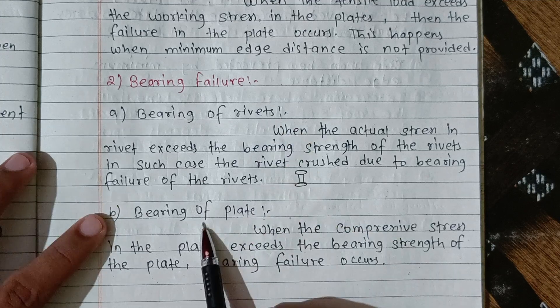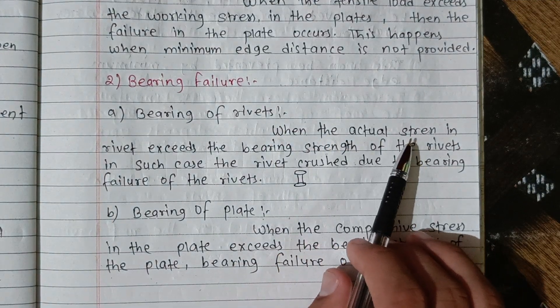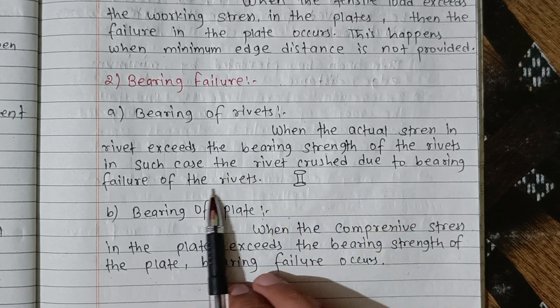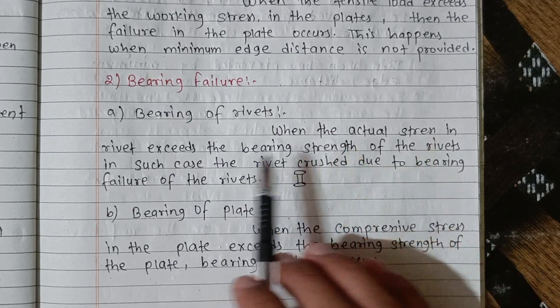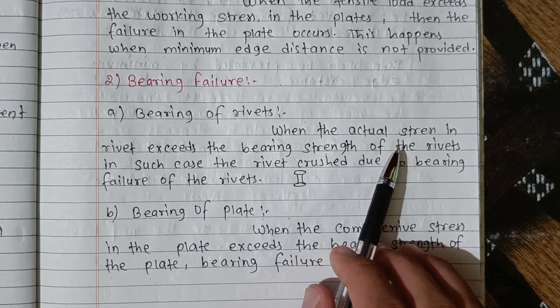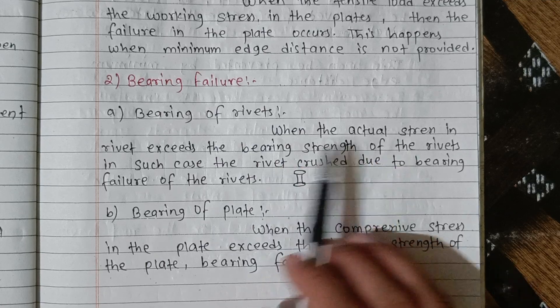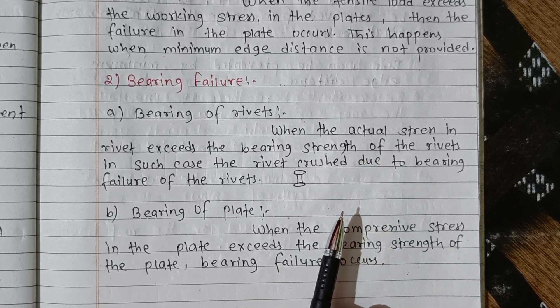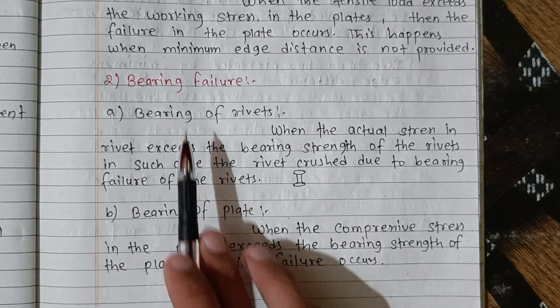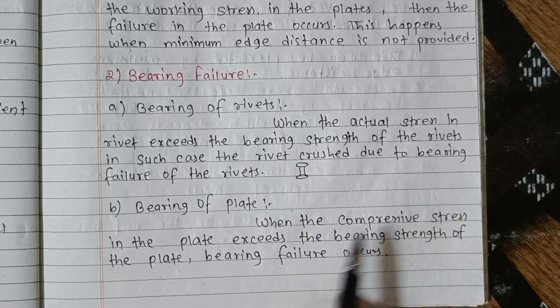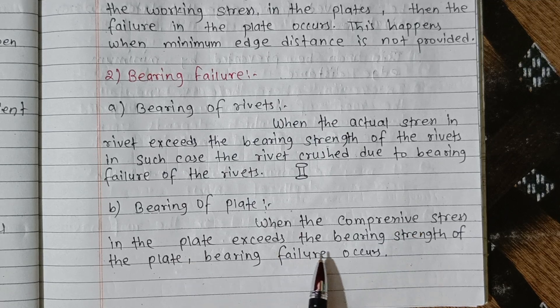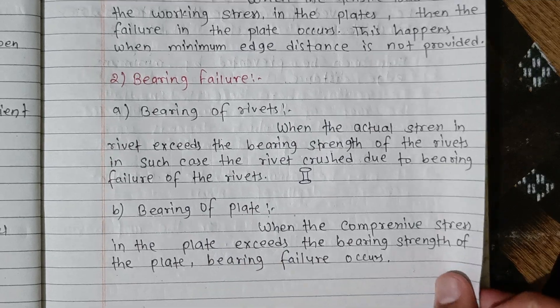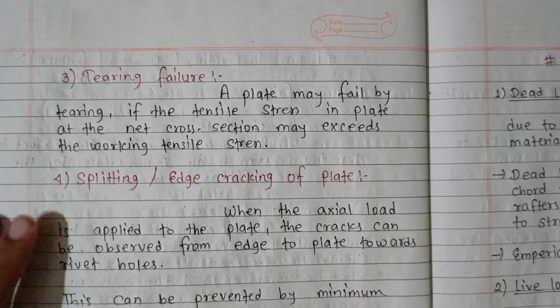Bearing failure: bearing of rivets and bearing of plate. Bearing failure means when the actual stress in the rivet exceeds the bearing strength of the rivets. In such case, the rivets crush due to bearing failure. When the compressive stress in the plate exceeds the bearing strength of the plate, bearing failure occurs.